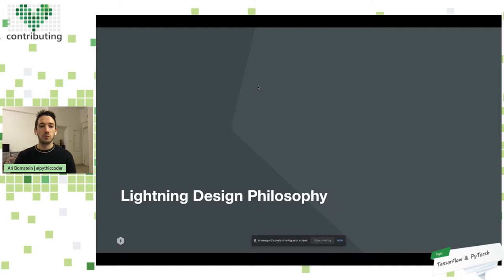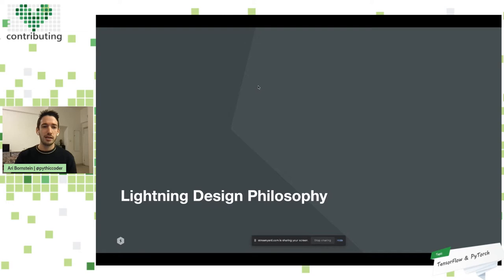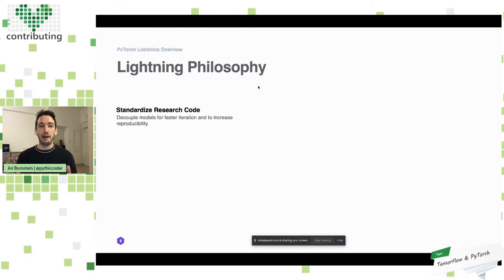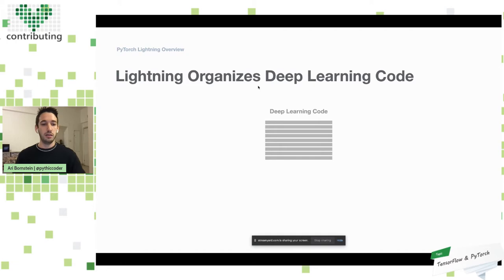To better understand this, let's look at Lightning's design philosophy, which breaks down into three major components. The first component is that in Lightning you should standardize your research code. To do this, you need to modularize — decouple models and data code from your baseline to increase the reproducibility of your application. Imagine we have a project, and I can give you a real world example.